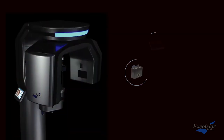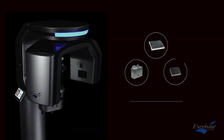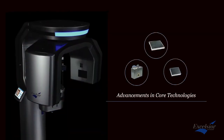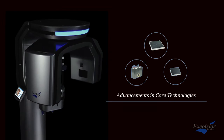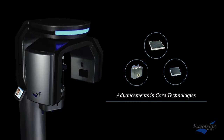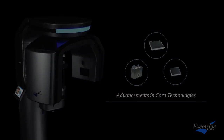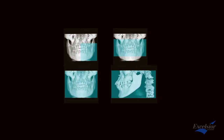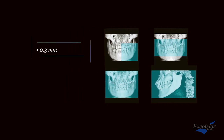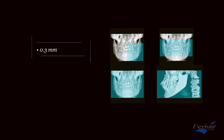The Prexion Excelsior combines the advancement of all CBCT core technologies to produce images with unparalleled clarity, including the smallest focal spot of 0.3 mm and 0.1 to 0.2 voxel size.